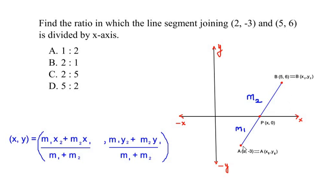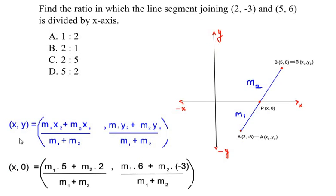Now let us substitute the values of x₁, y₁, x₂, y₂ in this formula. So here (x, y) are the coordinates of point P. So we have substituted (x, 0) is equal to (m₁·5 + m₂·2)/(m₁ + m₂)...